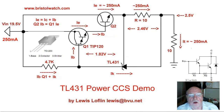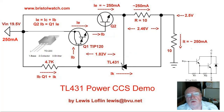Earlier I discussed how to use a TL431 with an NPN pass transistor to make a constant current source. I substituted a TIP120 power Darlington over a plain everyday NPN transistor. Now we are going to up the game and use the TIP120 to drive an even larger power transistor for higher current output.